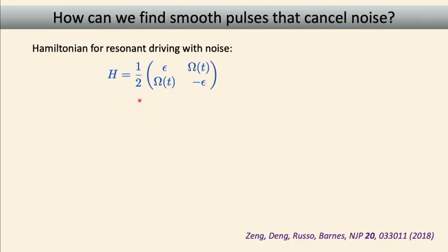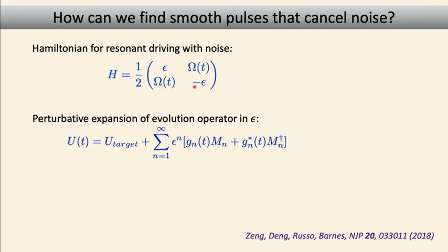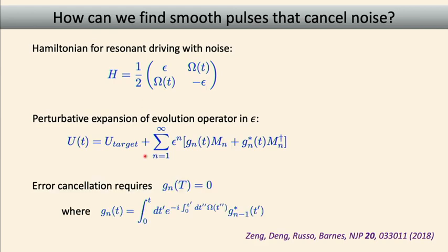There is a general solution to this problem. Focusing on the simplest case of dynamical decoupling with a one-qubit Hamiltonian, a control field on the x-axis omega of t, and detuning noise epsilon, I can do a perturbation series expansion and try to cancel the noise terms at the final time. The first order coefficient g1 is a complex function of time. I can plot it in a complex plane — as time progresses, starting at the origin, I trace out a path called the error curve.